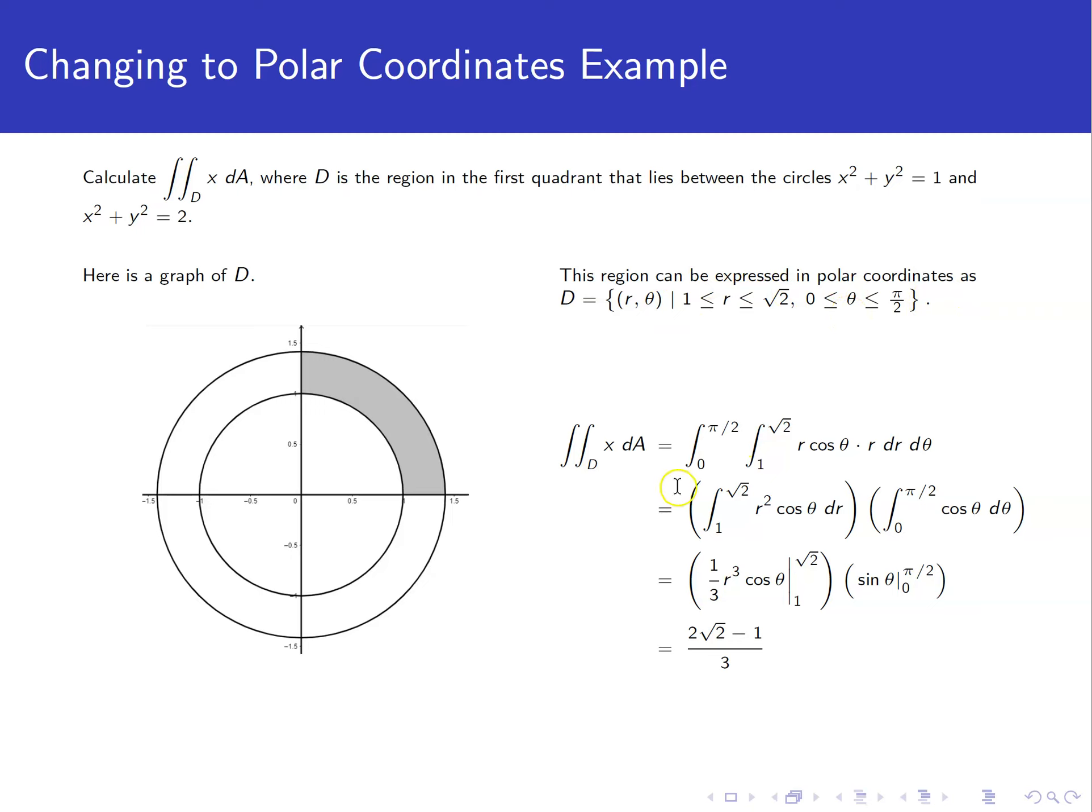So converting this to polar then, I also need to convert my x to polar. Well, that was one of our conversion formulas, just r cosine theta for x. And then dA gets replaced with r dr d theta. And now I've converted this to polar where my r's go from 1 to root 2 and my thetas go from 0 to pi over 2.